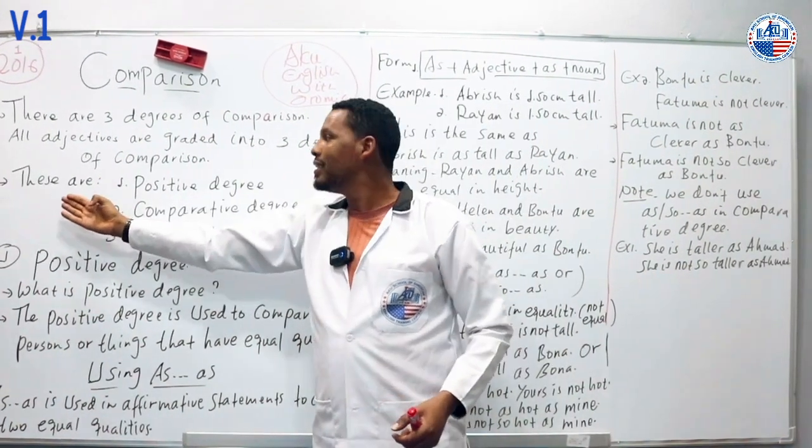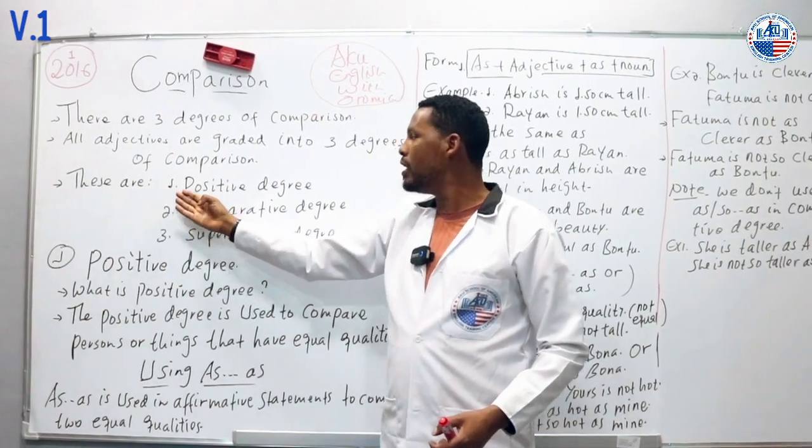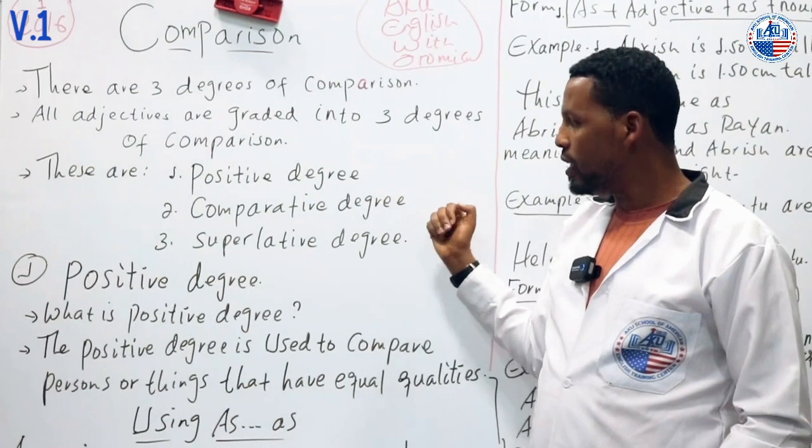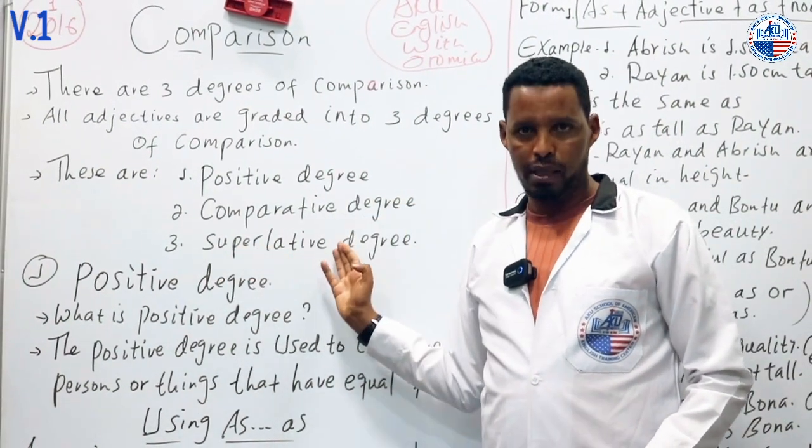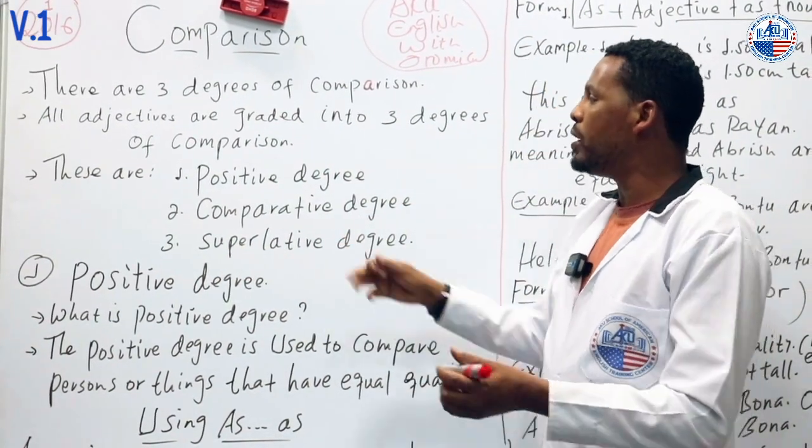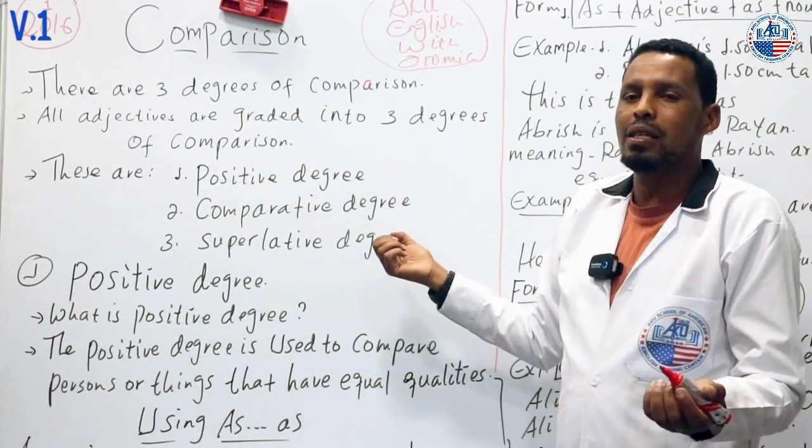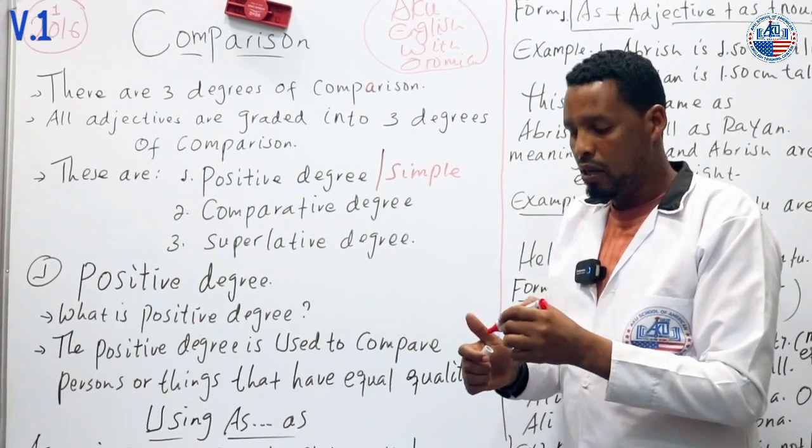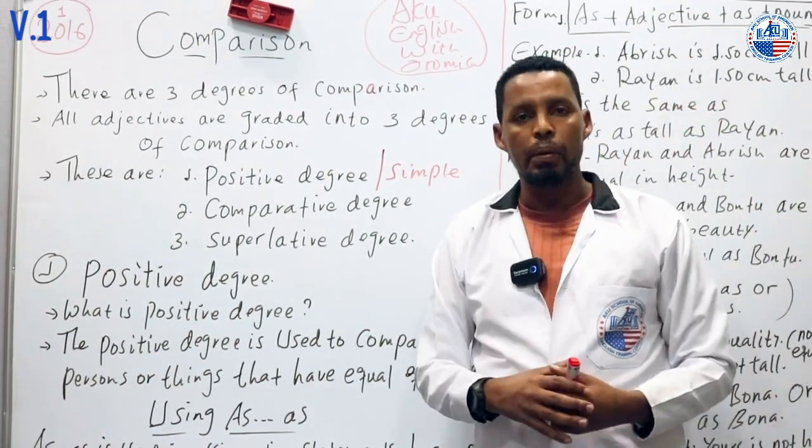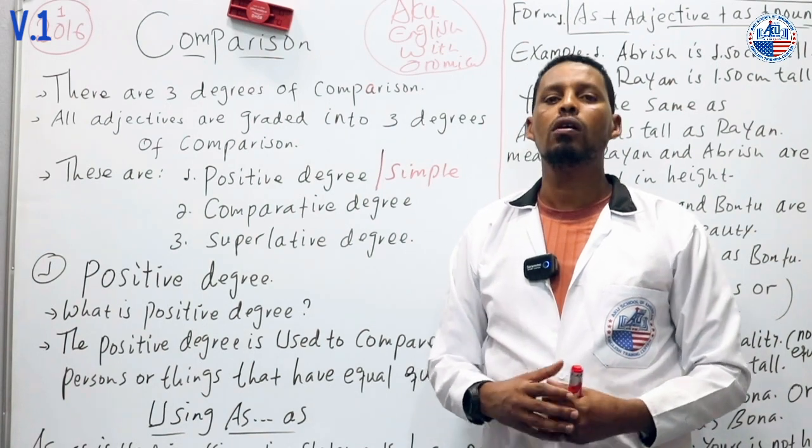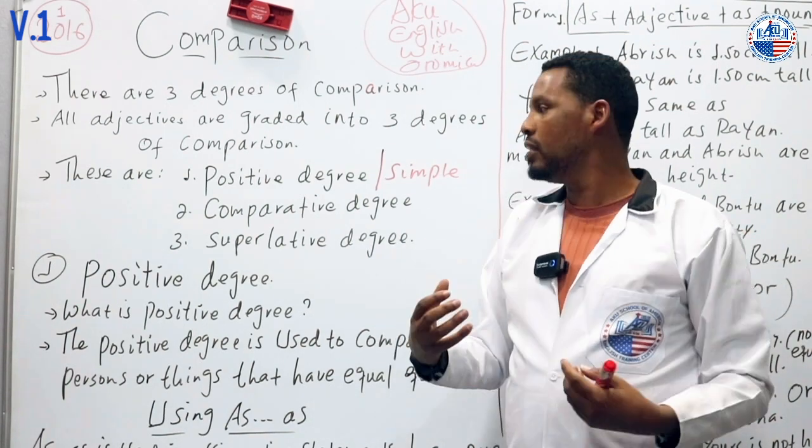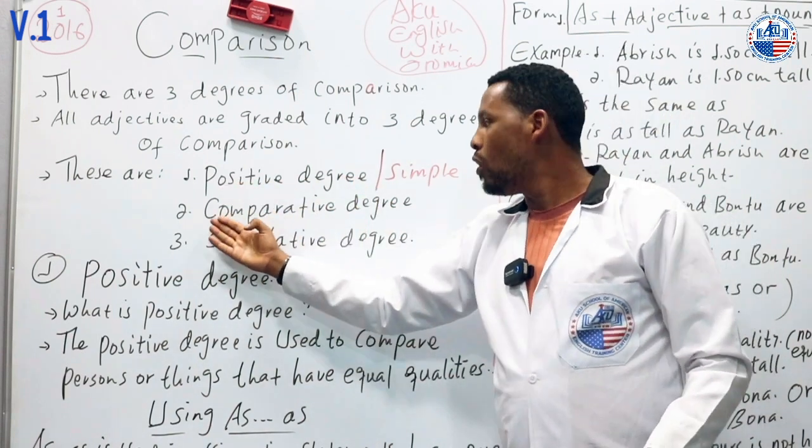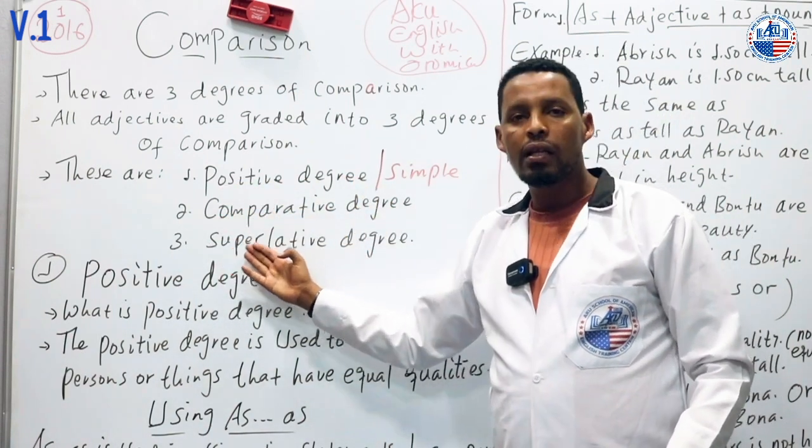These are: positive degree, comparative degree, and superlative degree. Or you can say simple degree, comparative degree, and superlative degree.